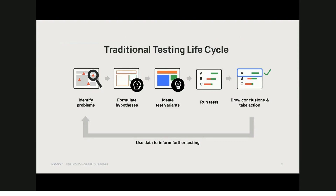Before we go deeper into how Evolve addresses those challenges, we wanted to outline the traditional approach to optimization so that we have a baseline to compare with. Testing traditionally follows this staged approach: identifying issues in the customer experience that impact our business metrics, hypothesizing about ways to address those issues, coming up with ideas to test our hypotheses, running those tests in our digital experiences, analyzing the results and drawing conclusions. At this point, we take action by ending a test, adopting what's statistically significant, and taking what we've learned to consider the next iteration of testing. This process isn't that different from what we had in mind when building the Evolve platform, except for one really important part — the taking action part.